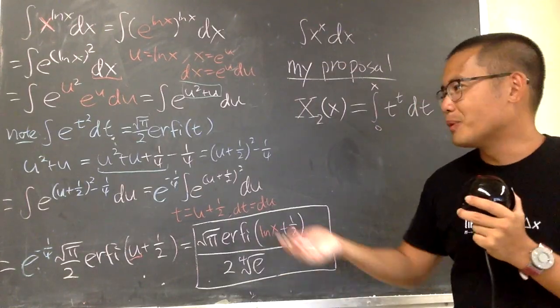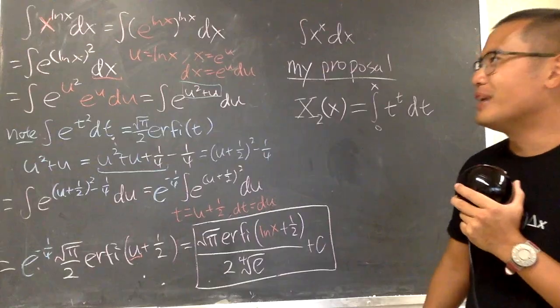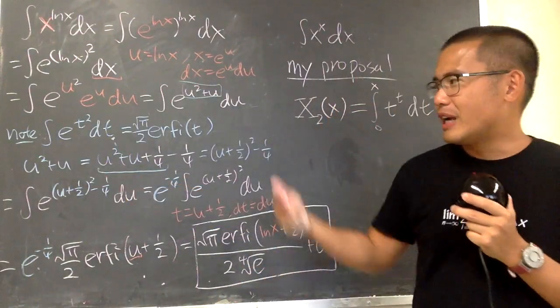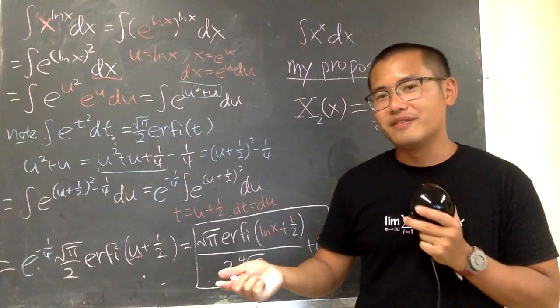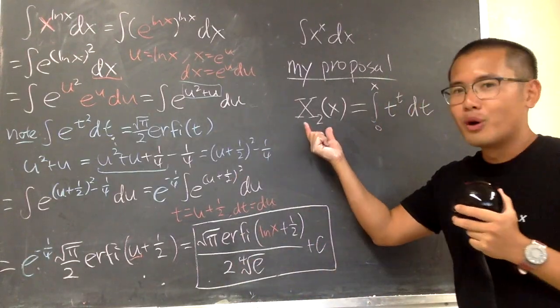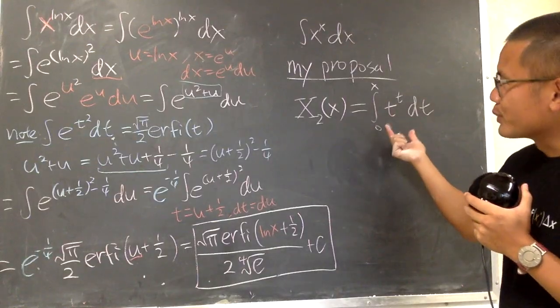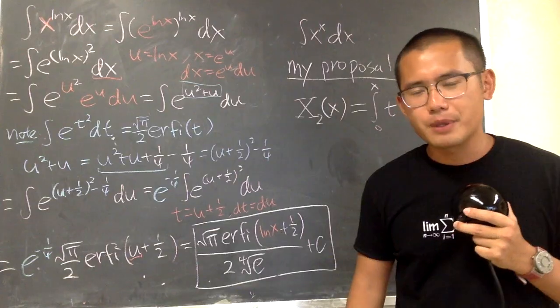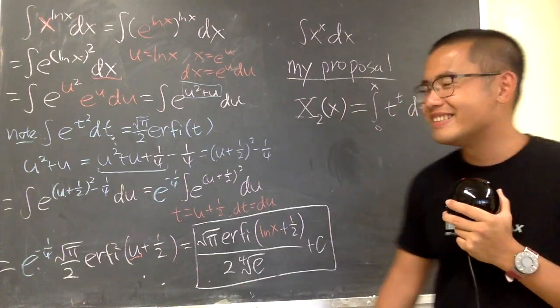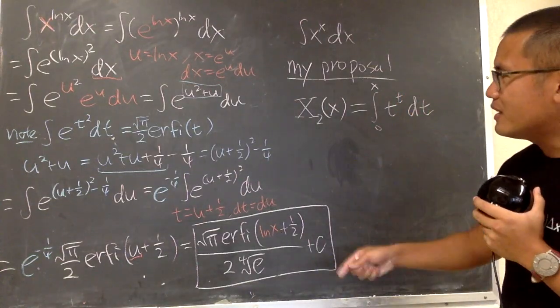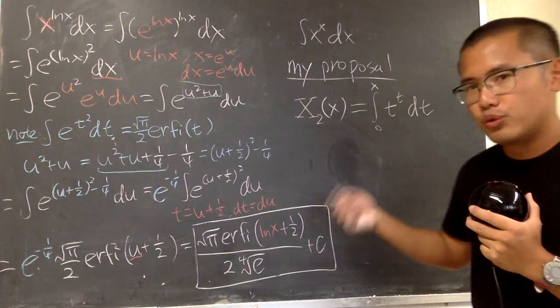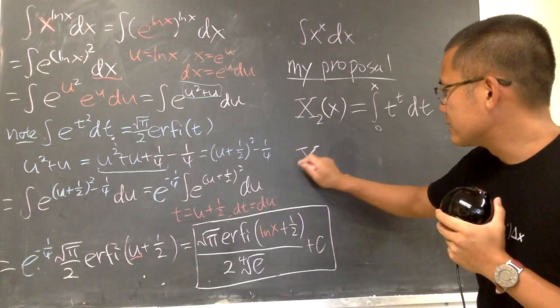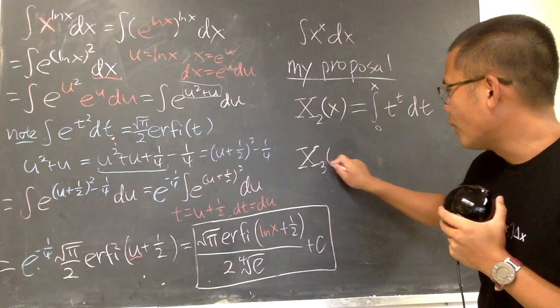That's kind of like how we come up with the special functions, because if you have a really cool integral, for example for this one, you can just use the error function and the error function is defined in terms of an integral. So why don't we call this integral to be some other functions and this is just between you and I. From here, you see, I put a little 2 because we can do more.